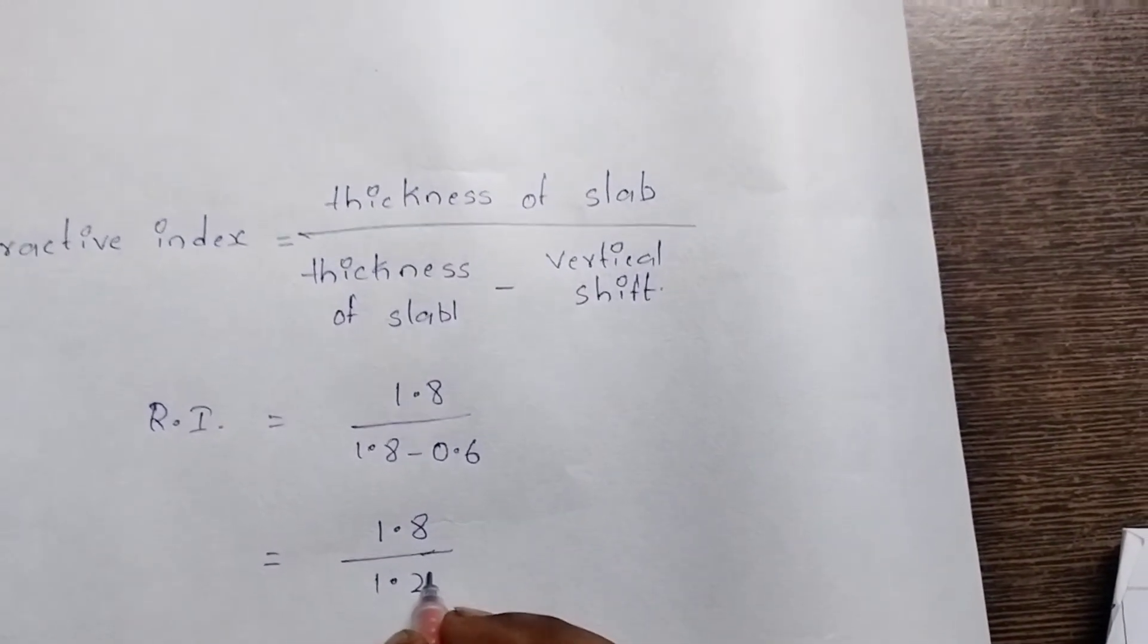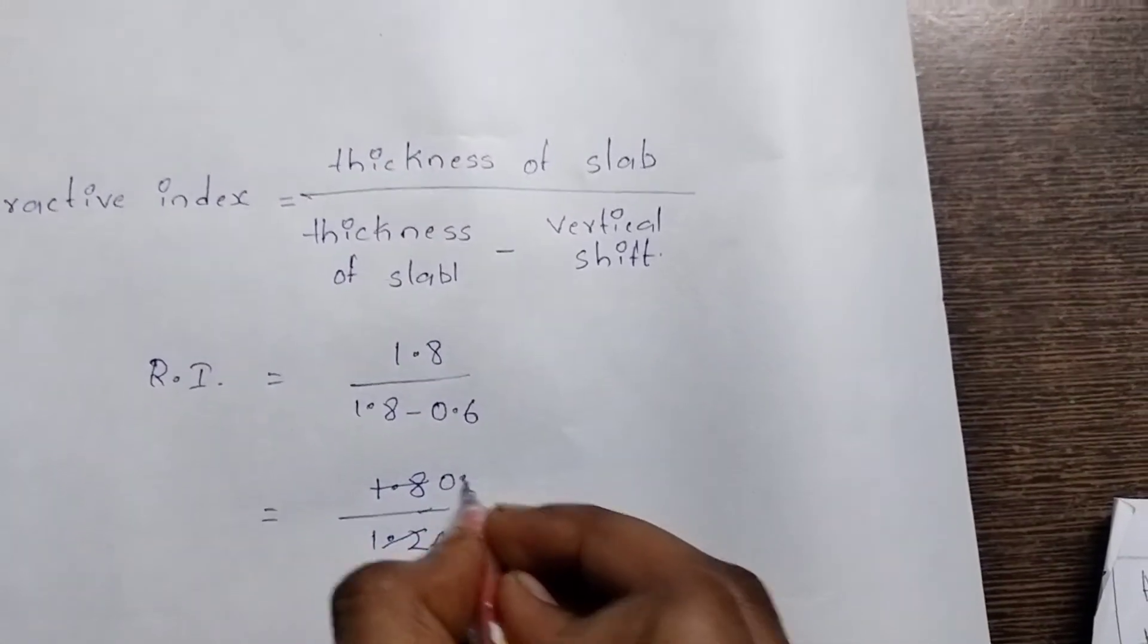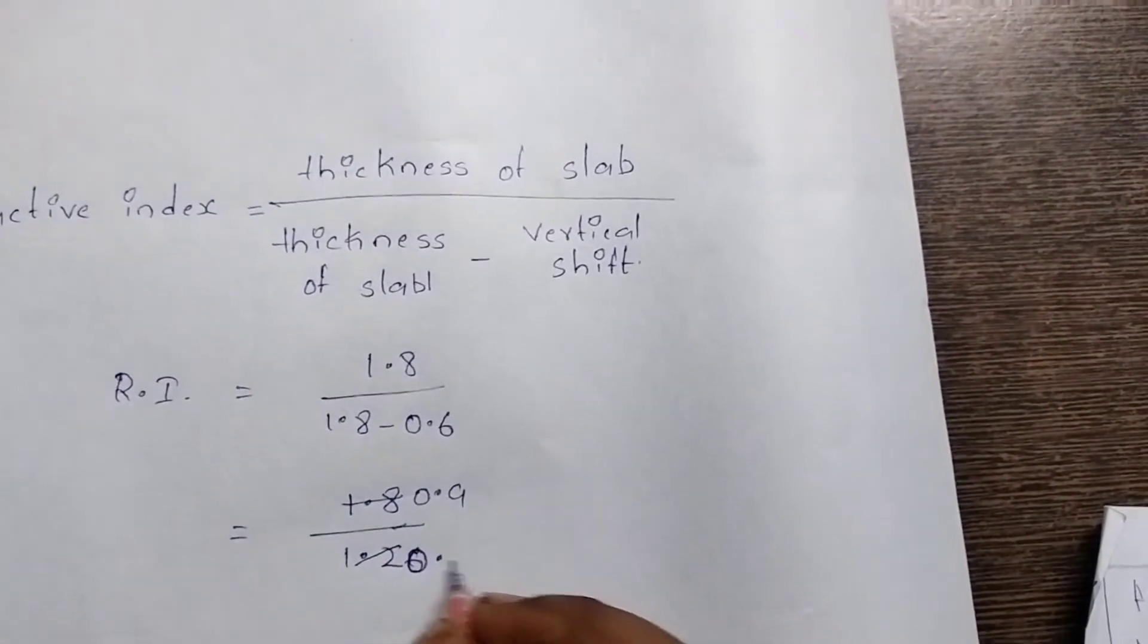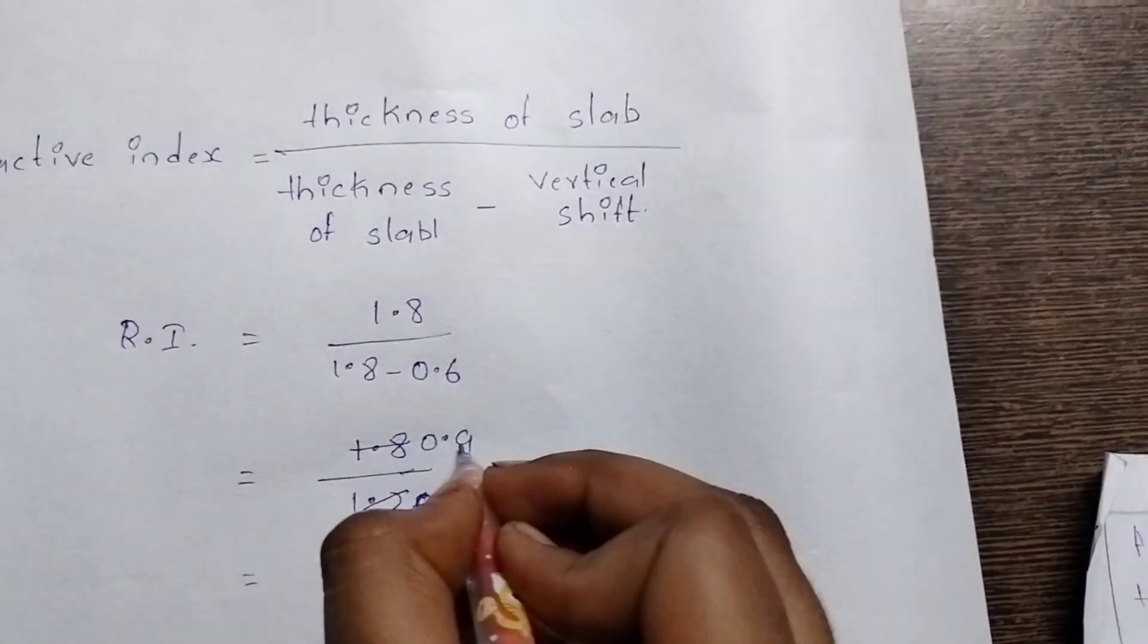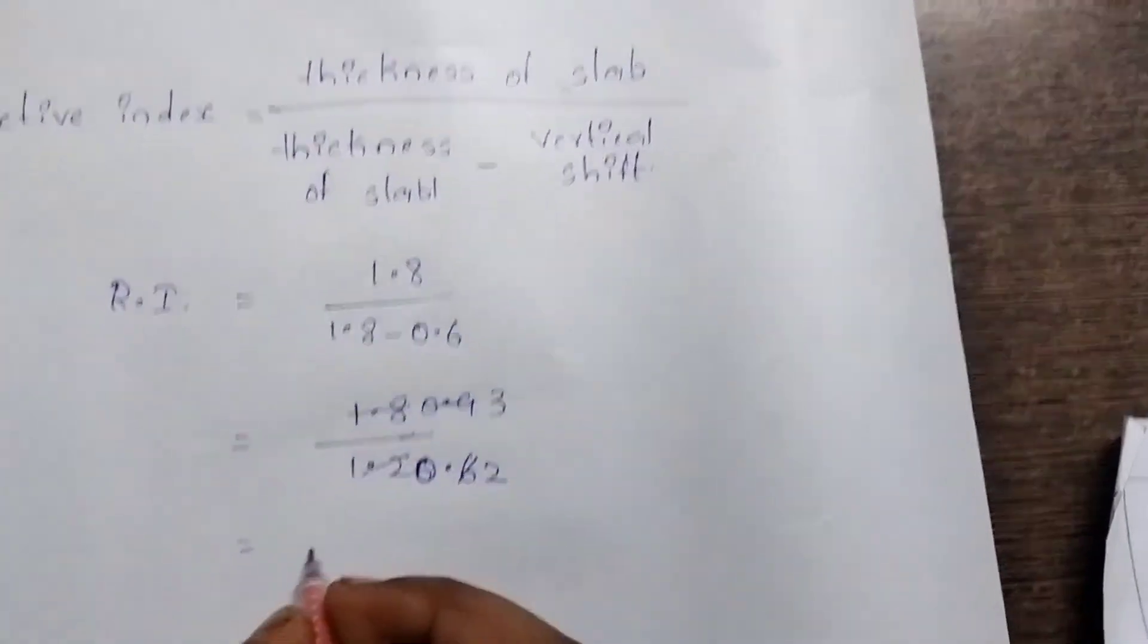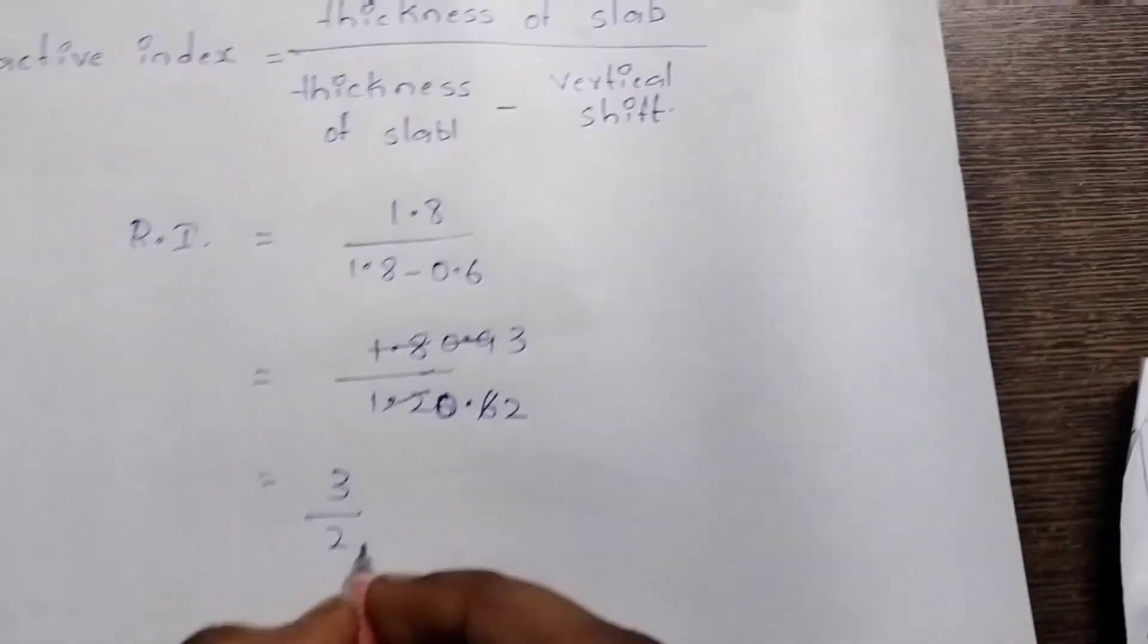Then 1.8 cm divided by 1.2 cm is equal to 0.9 cm by 0.6 cm. That is equal to 3 by 2. That is the refractive index of the glass slab.